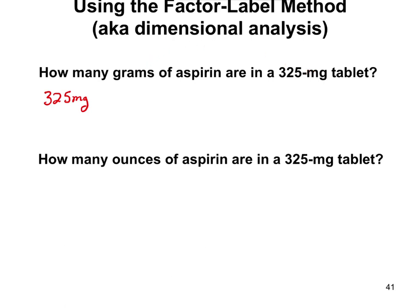There's no conversion given to us in the problem, which means it's probably one we need to know ourselves. Based on our metric numbers, we know that 1,000 milligrams is equal to 1 gram. Milli is a smaller unit, so we need a lot of the smaller one to equal one of the bigger one — 1,000 milligrams equals 1 gram.